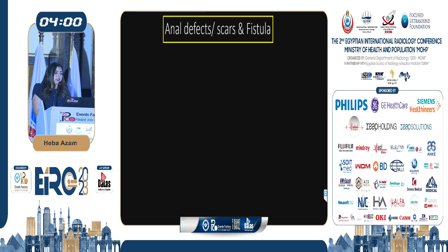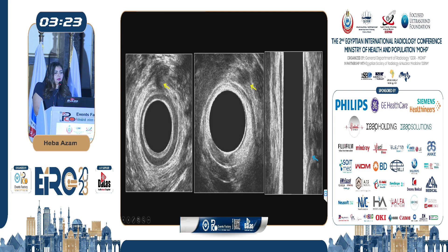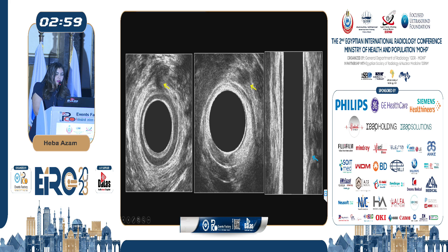Endoanal ultrasound allows us to identify anal defects, scars, and fistulae. In this case, the internal anal sphincter's hypoechoic ring is interrupted from 1 o'clock to 6 o'clock, and there is a hypoechoic collection in the intersphincteric space extending to the external anal sphincter, representing a defect in the internal anal sphincter and a fistula tract. In another case, the internal anal sphincter is shown as a continuous hypoechoic ring with no interruption, yet in the external anal sphincter a hypoechoic collection is seen at 12 and 1 o'clock; on coronal reconstruction, a fistula tract is visible in the intersphincteric space breaching the external anal sphincter and extending beyond it.